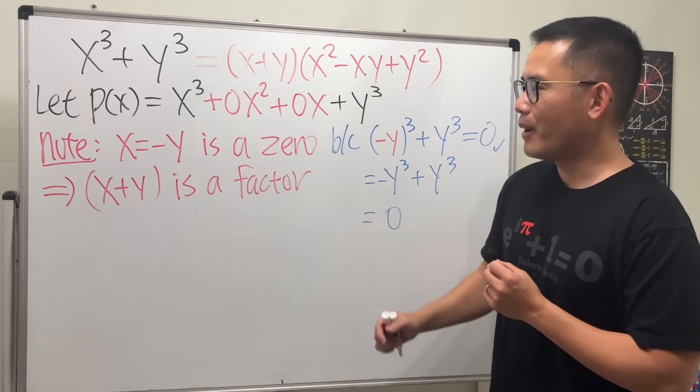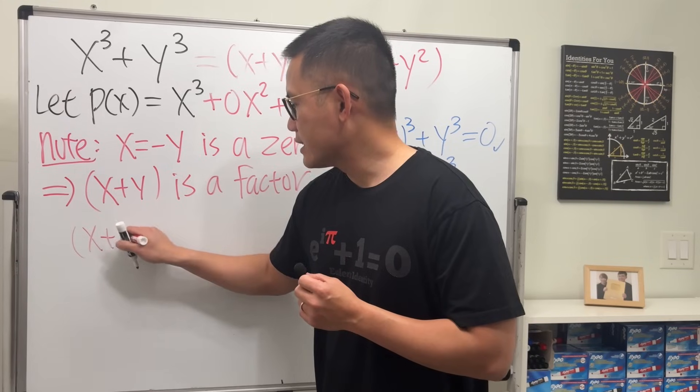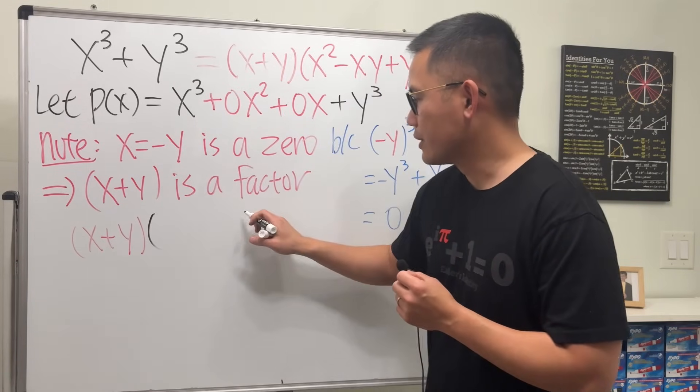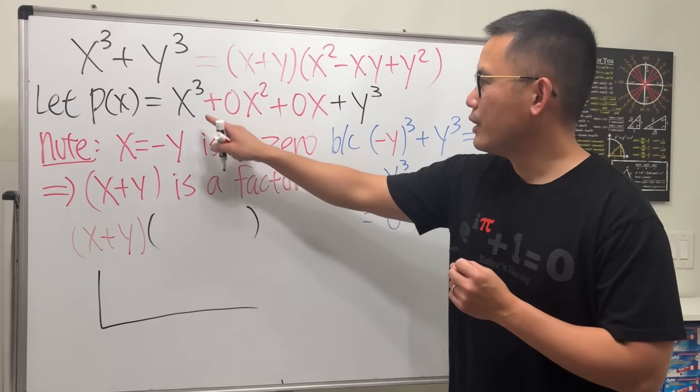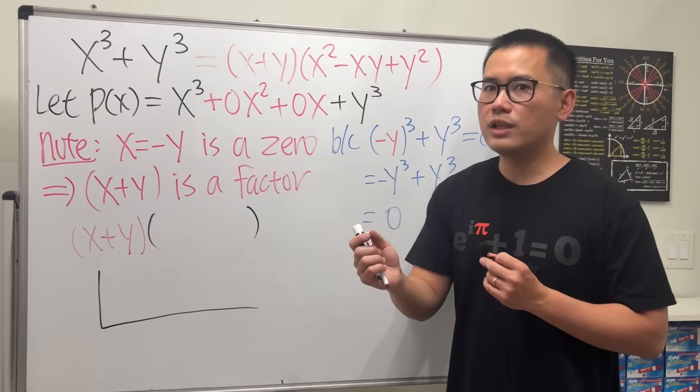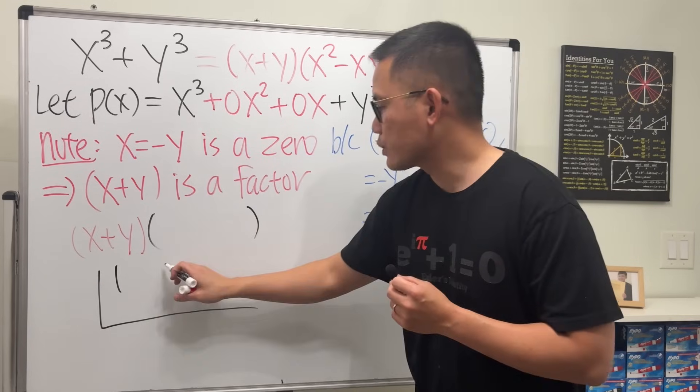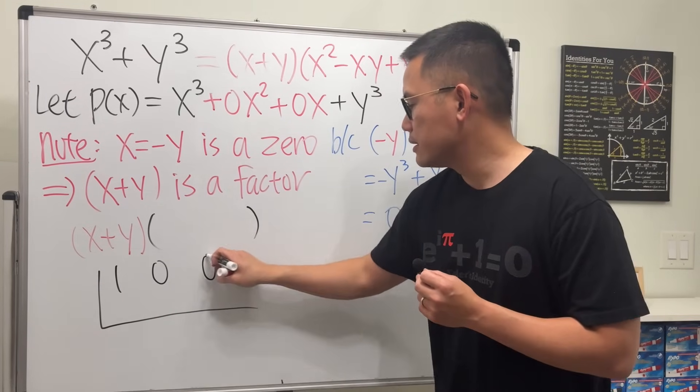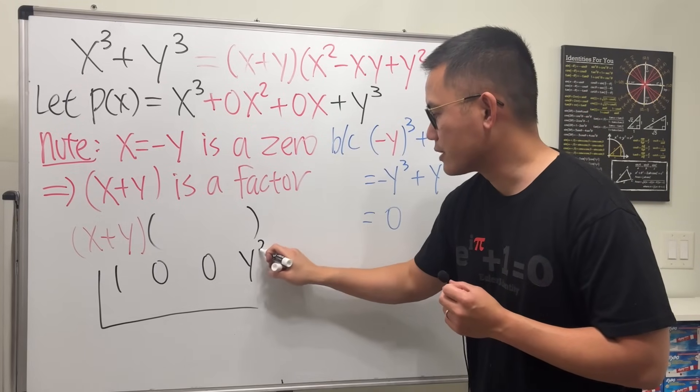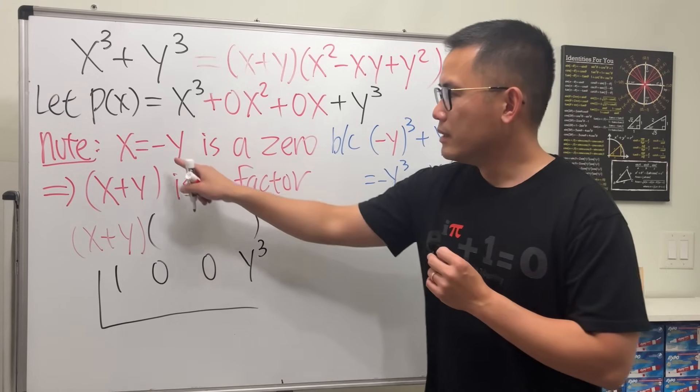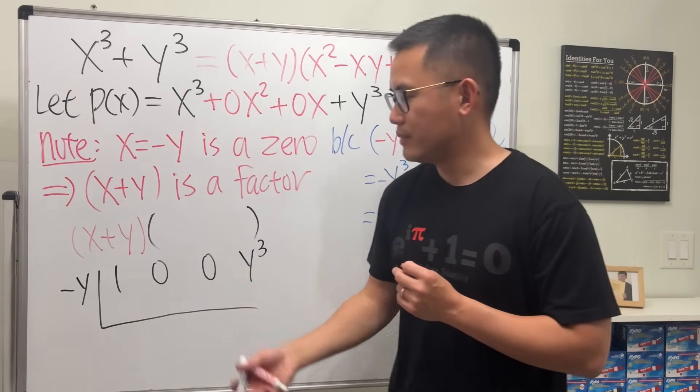So, to get the other part, what we'll do is now we have x plus y already. For the other part, we'll do synthetic division. Here we go. Look at this, and write down the coefficients for x. We have 1x cubed, 0x squared, 0x, and this right here, well, there's no x, but that's a constant term. Write that down, y to the third power. Since negative y is a zero, I will put down negative y here, and it just worked out.